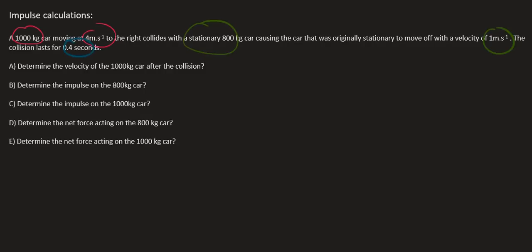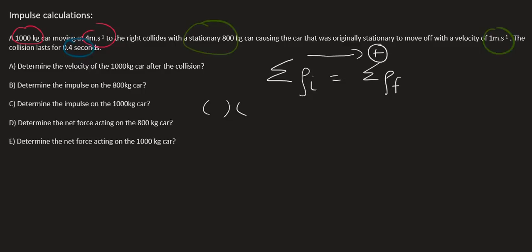Question A: Determine the velocity of the 1000 kilogram car after the collision. Whenever you have two cars colliding and you need to know the velocity of one of them after the collision, we use the conservation of momentum formula. Remember, in any kind of collision the total momentum of the system remains constant. We then choose a direction and open up our brackets.